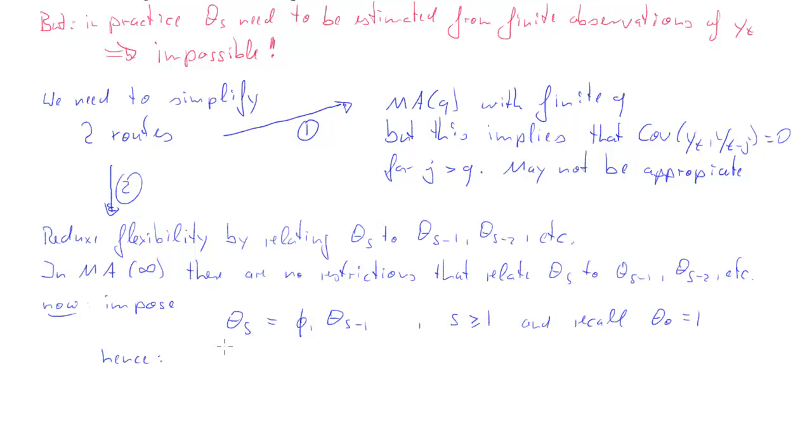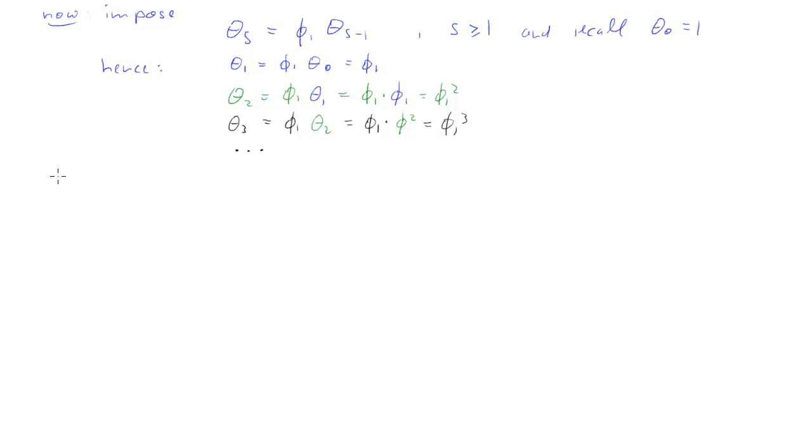With this, we can write down an equation for theta 1. Theta 1 is phi 1 times theta 0 and that is just phi 1. Then we can write down another equation for theta 2, that's phi 1 times theta 1 and that is phi 1 times phi 1 because theta 1 is 1, so that's phi 1 squared. And then we can write down a similar equation for theta 3, which is equal to phi 1 times theta 2. And since theta 2 is phi 1 squared, we get phi 1 cubed and so forth. You can see one value of the MA coefficient is related to the next. That means we really have an MA infinity process with only two parameters, mu and phi 1.